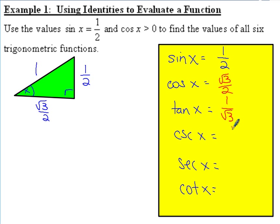So, cosecant is the reciprocal of sine, that's going to be two. And secant is two over square root of three.